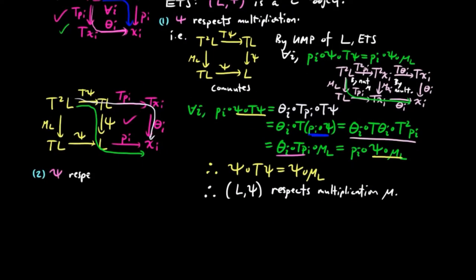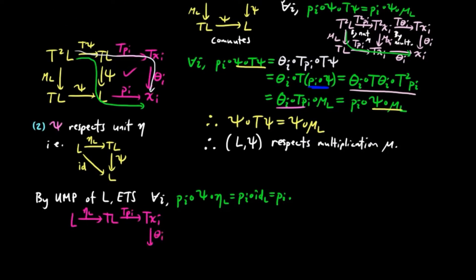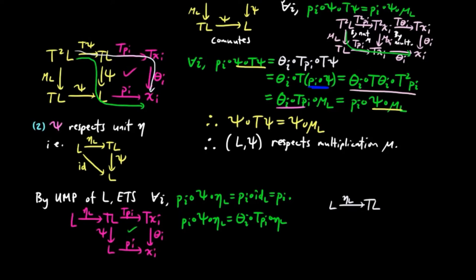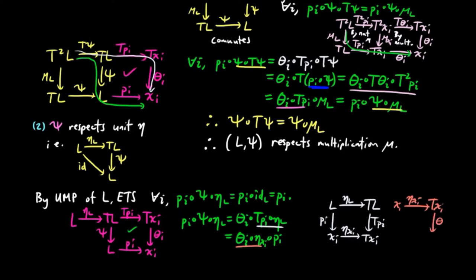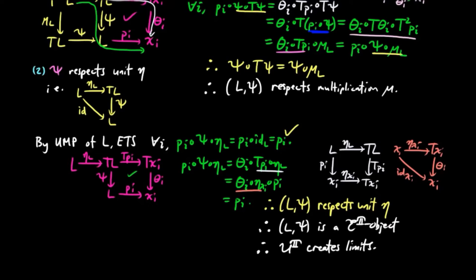We also need to show that Xi respects the unit eta of the monad — in other words, Xi∘eta∘L equals the identity on L. Using the universal mapping property of L, it is enough to show that for each I, PI∘Xi∘eta∘L equals PI. Using the commuting purple square pre-composed by eta∘L, we get PI∘Xi∘eta∘L equals thetaI∘TPI∘eta∘L. By naturality of eta, this becomes thetaI∘eta∘Xi∘Pi, and by the unit law for each thetaI, this equals Pi. Therefore (L, Xi) respects the unit eta, and so (L, Xi) is an Eilenberg-Moore object, meaning the forgetful functor for the Eilenberg-Moore category creates limits. That concludes (2).